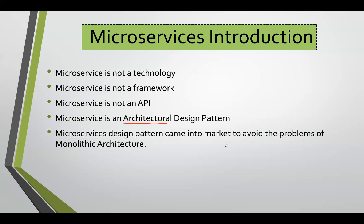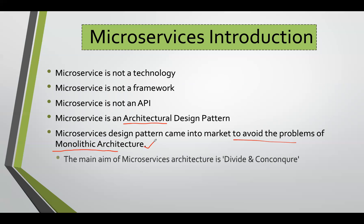Microservices were introduced to avoid the problems of monolithic architecture, which we covered in the previous video. The main aim is to divide and conquer — each module or component will be separated and independent from each other. If they want to communicate, they can communicate with each other, but all modules will be divided. That is the main theme of microservices — it is an architectural design pattern.